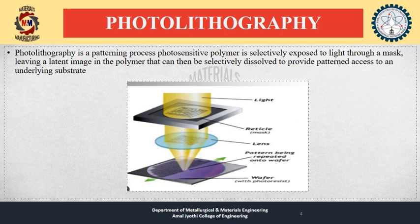We are going to discuss the first classification of lithography — photolithography. Photolithography is a patterning process in which a photosensitive polymer is selectively exposed to light through a mask, leaving a latent image in the polymer that can then be selectively dissolved to provide pattern access to an underlying substrate. In integrated circuit manufacturing, photolithography or optical lithography is a general term used for techniques that use light to produce thin films of suitable material over a substrate such as silicon, to protect selected areas during subsequent etching, deposition, or implantation operations.